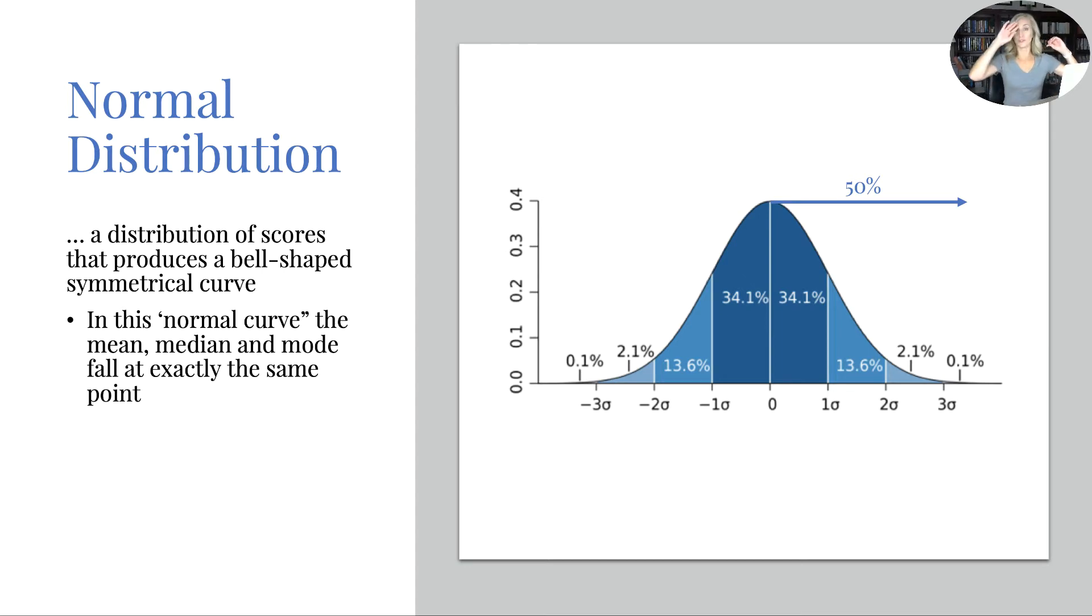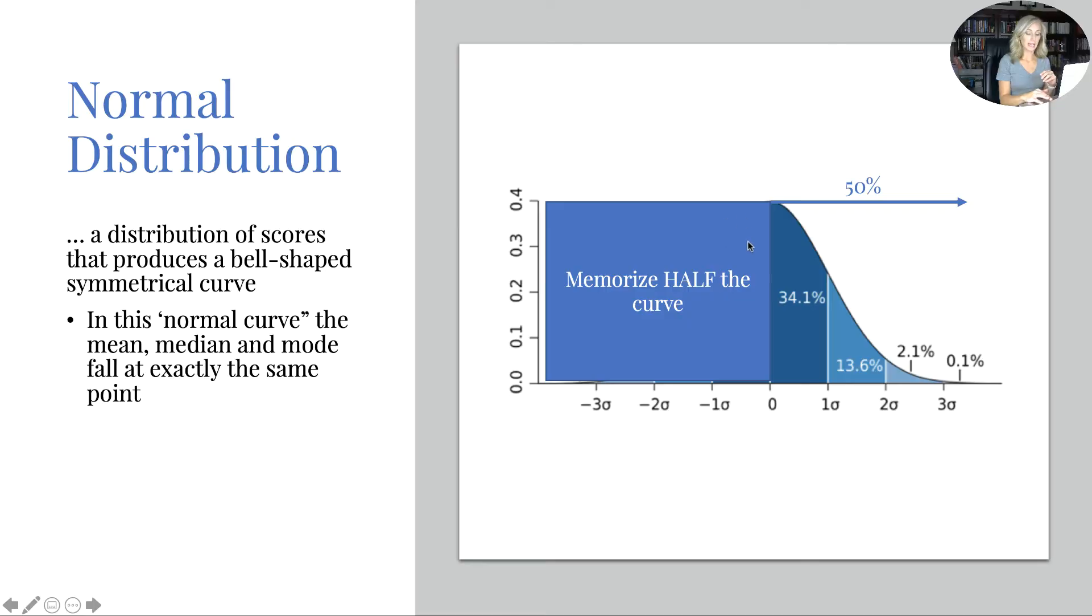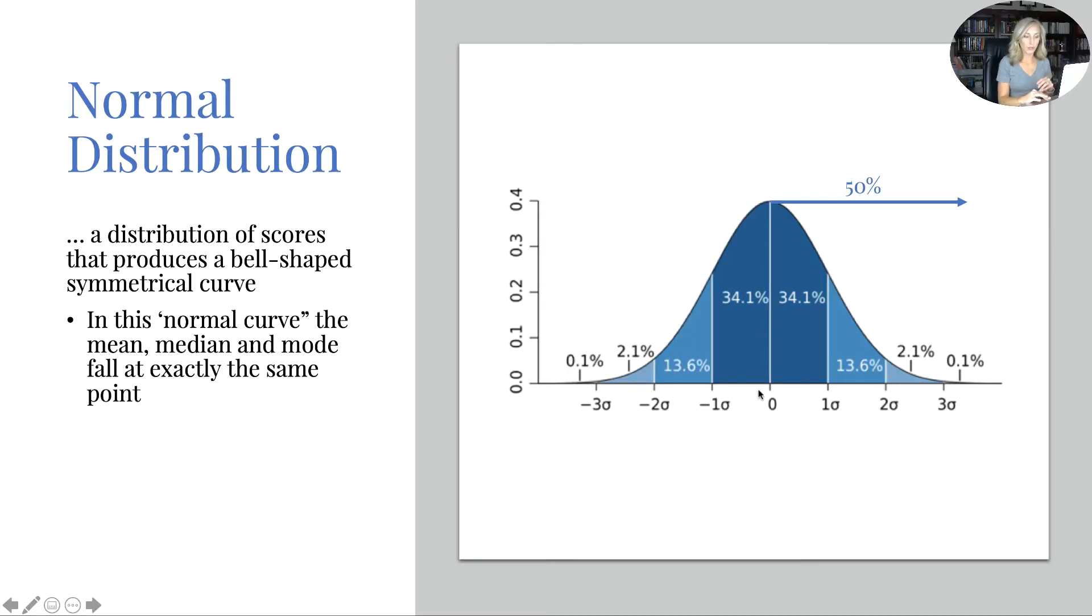Alright, let's talk normal distribution. A normal distribution is a distribution of scores that produces a bell-shaped symmetrical curve, as you see on this chart here. In this, quote, normal curve, the mean, median, and mode fall exactly at the same point, which is right in the center. So if you see that 0 there, that means it's 0 standard deviations away from the mean. So I'll say it again, that middle line represents the mean, median, and mode.